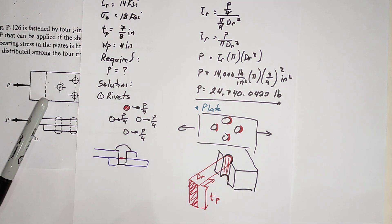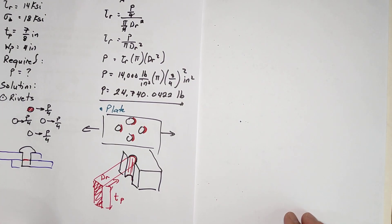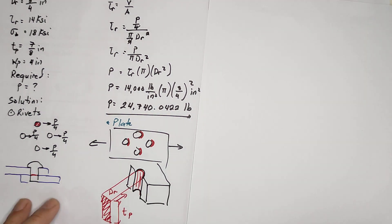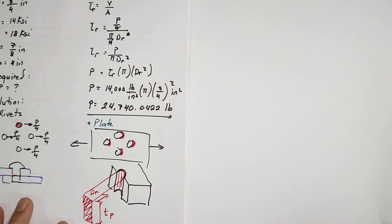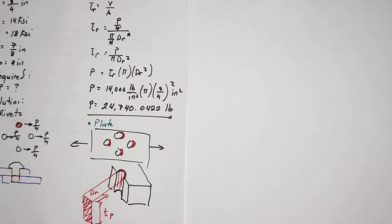We assume the hole is the same diameter as the rivets. In machine design we have some difference in diameter, but for strength of materials we assume they are equal in diameter.